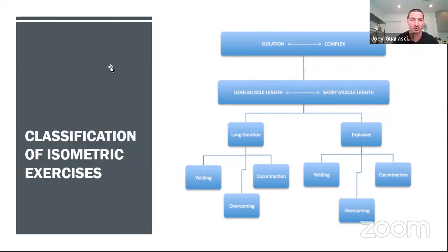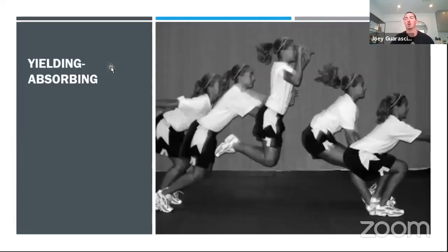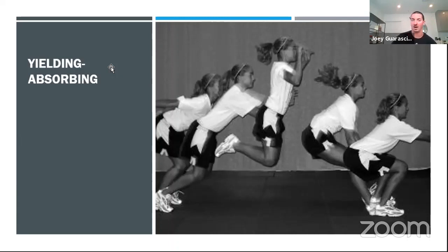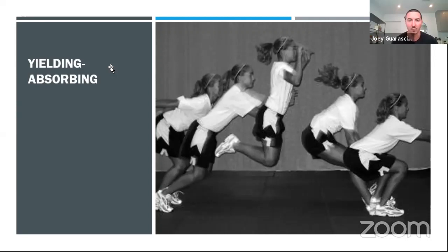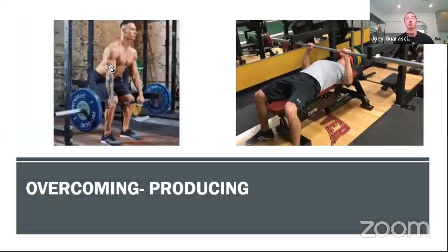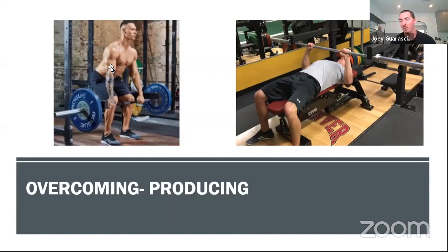I think of yielding as absorbing force and overcoming as producing force. A lot of what we do in sport is yielding — a change of direction involves yielding isometric forces, landing from a jump involves yielding forces, a rapid RDL stopped at the bottom involves yielding forces. Overcoming is producing force against an external object that produces equal or greater force so we cannot move it — exercises like pin pulls and rack presses, requiring maximum intent and being extremely taxing neurally.